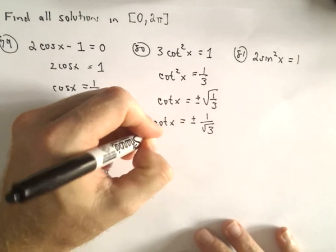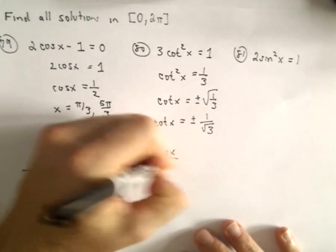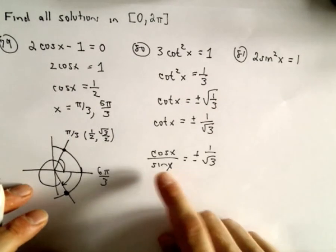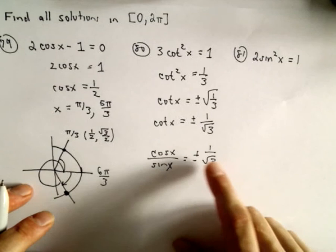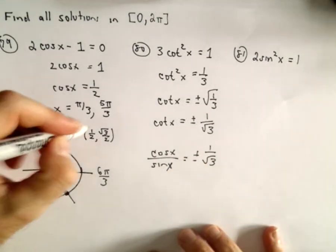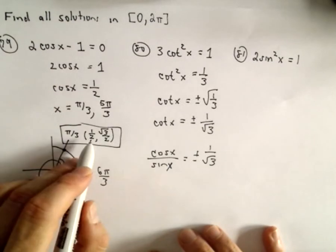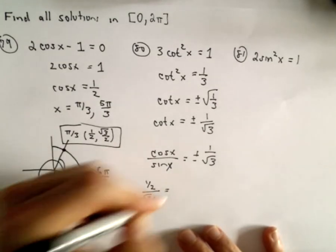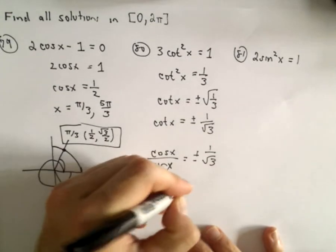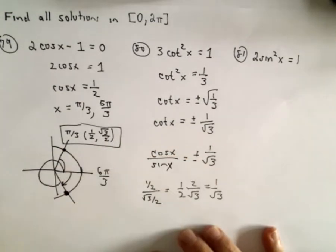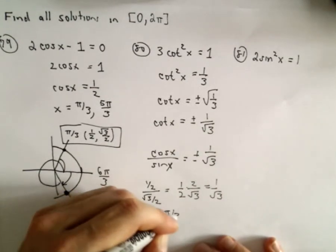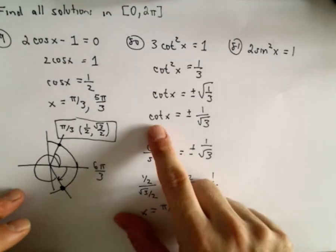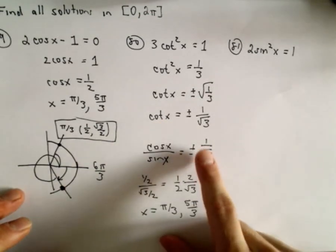Cotangent is cosine over sine. On the unit circle, I'm looking for where the ratio of the x-coordinate to the y-coordinate equals 1 over root 3. At pi over 3, cosine is 1/2 and sine is root 3 over 2, which gives us positive 1 over root 3. So pi over 3 is one solution. Likewise, at 5 pi over 3, cotangent of 5 pi over 3 also gives us positive 1 over root 3.